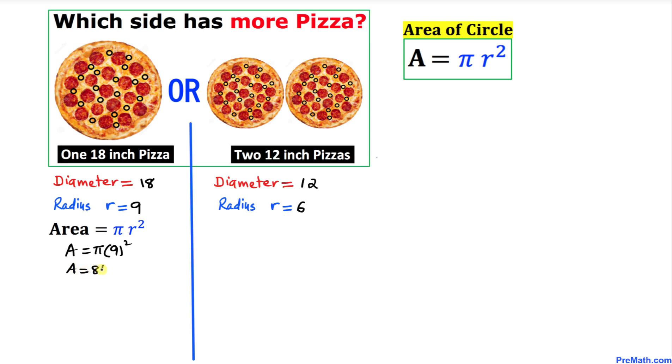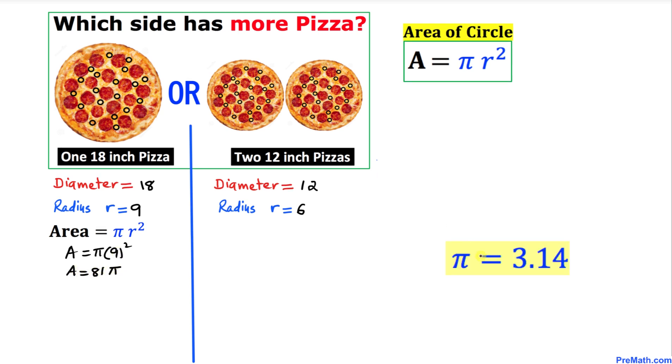So 81 times 3.14—if we multiply this out, the area is approximately 254.34 square inches. Now let's go ahead and repeat the same process on the other side.